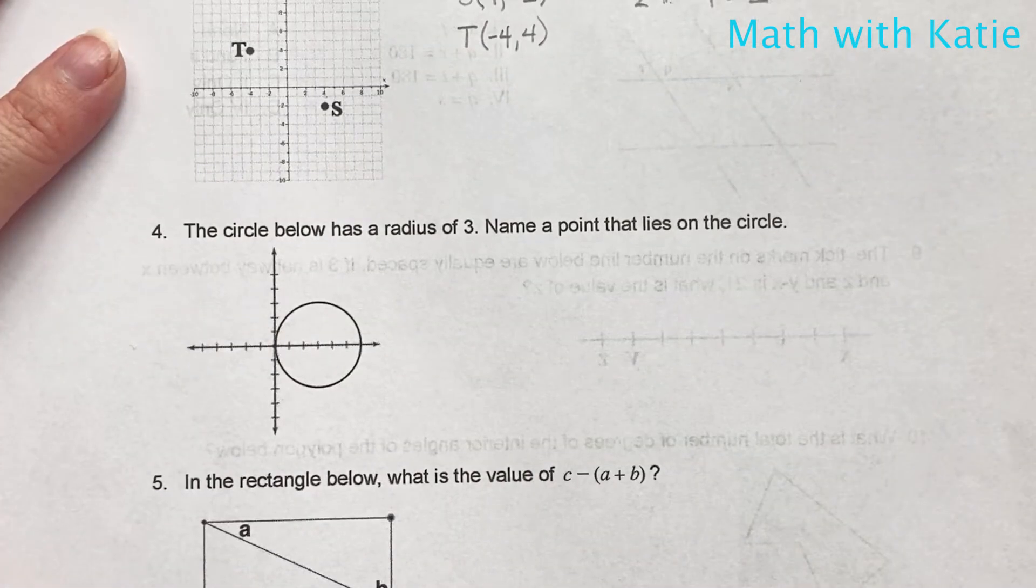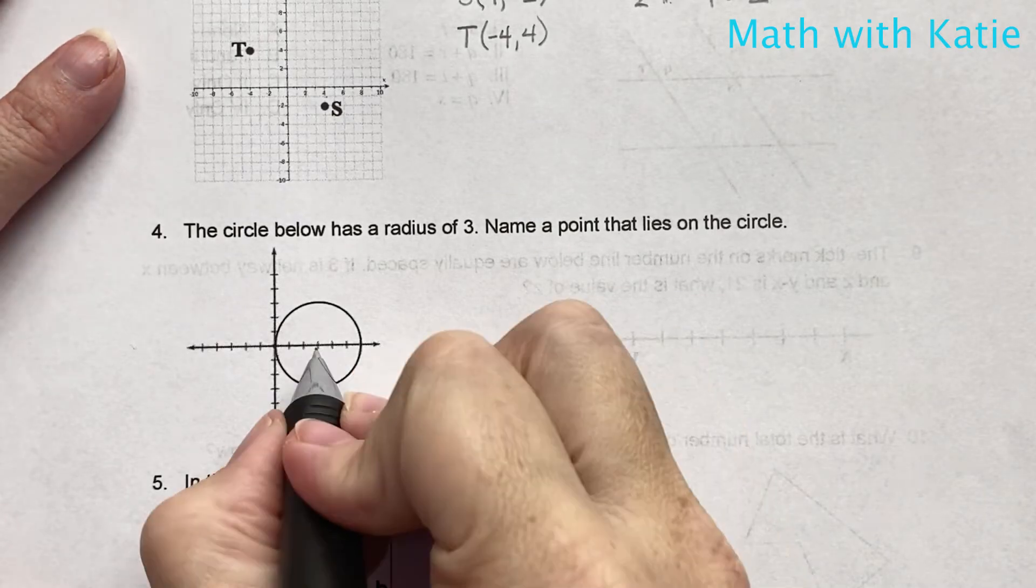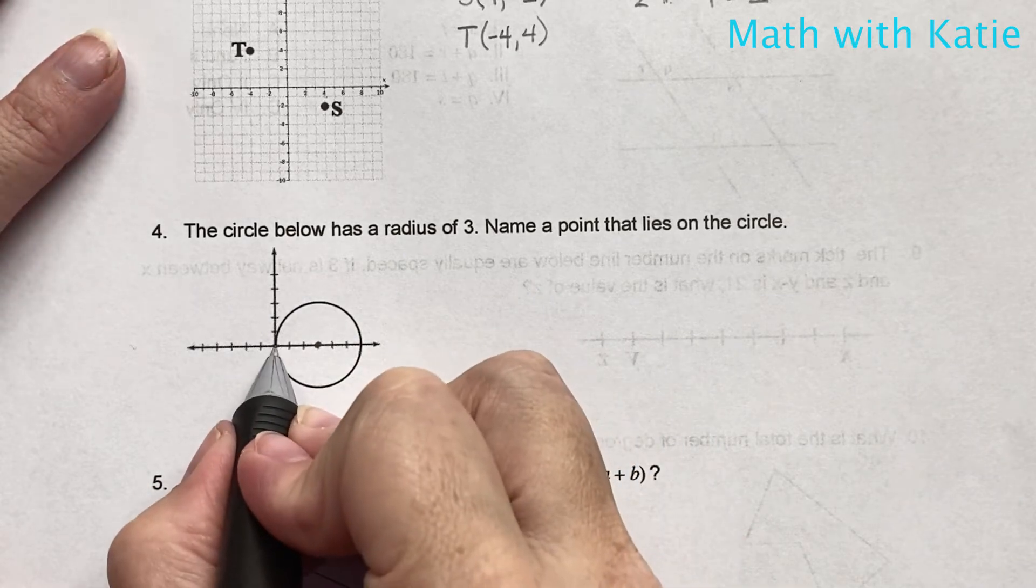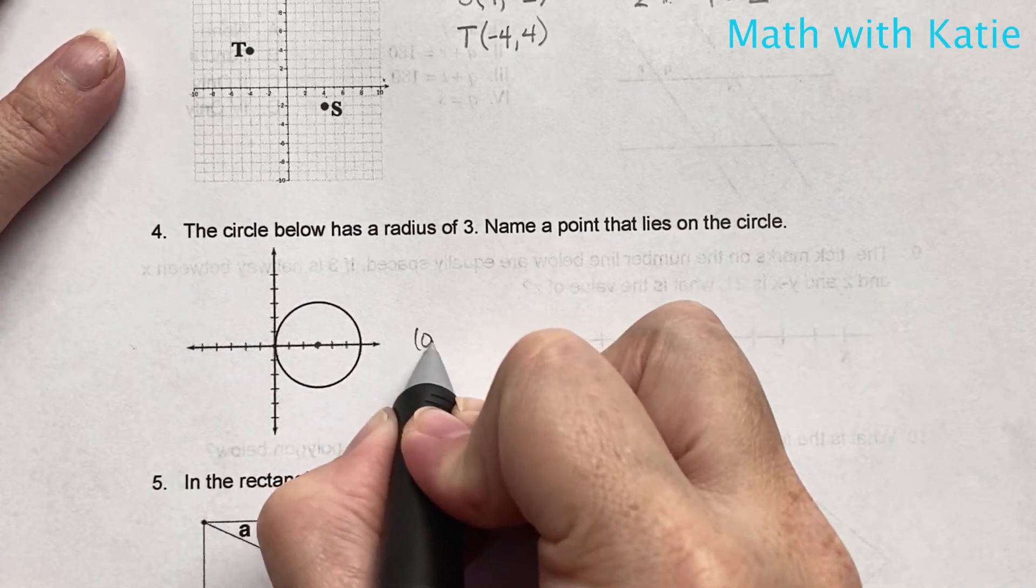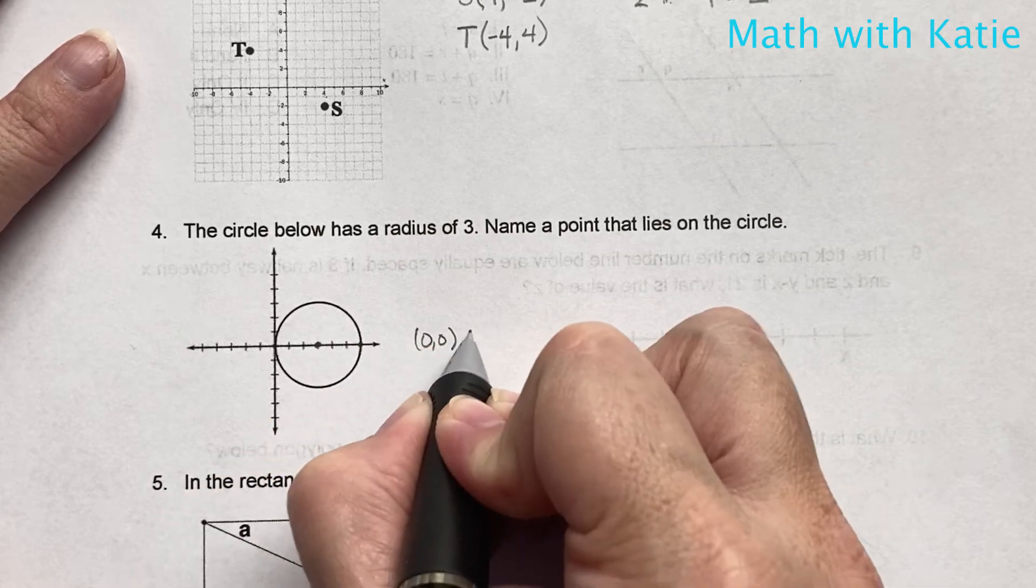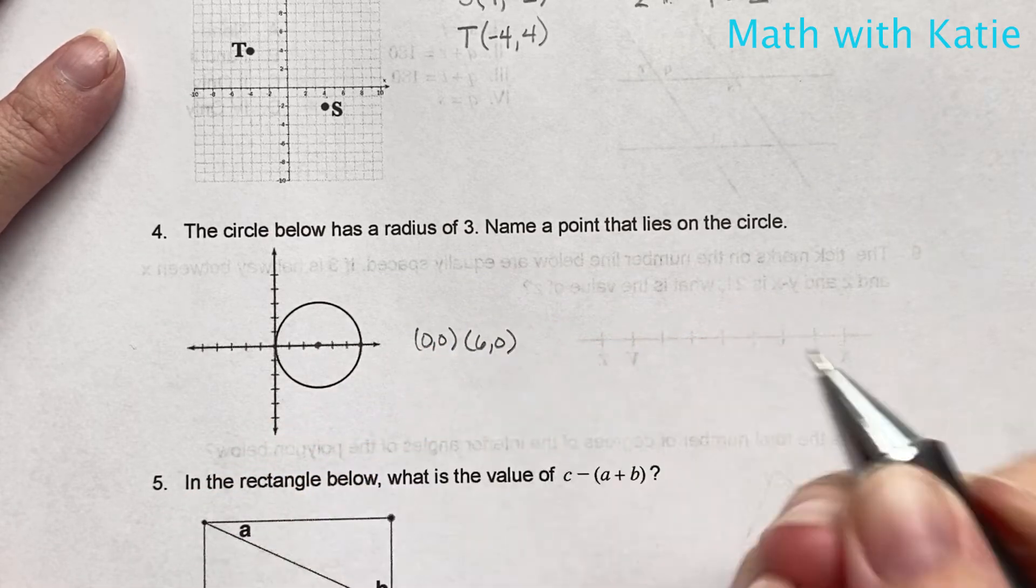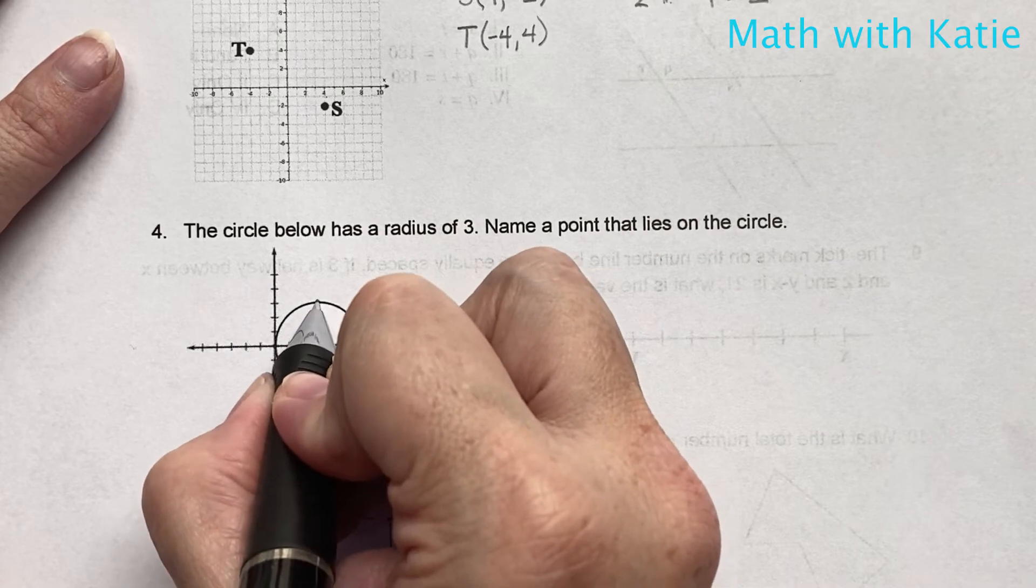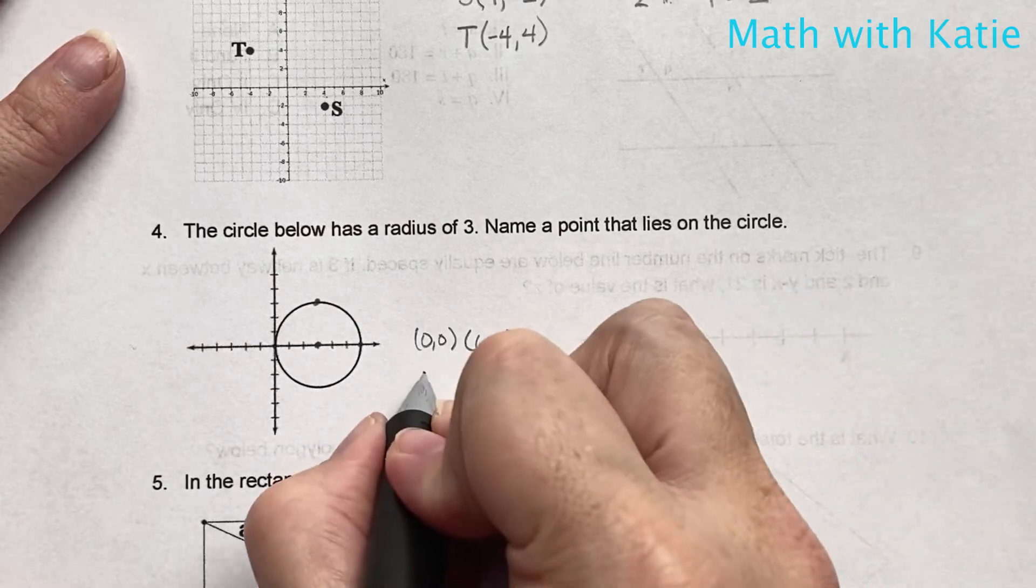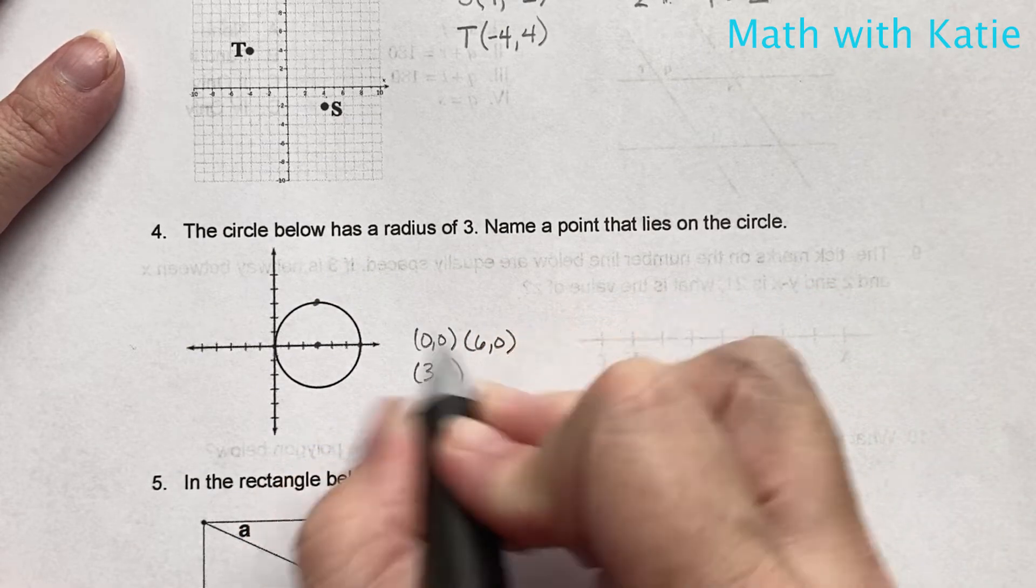The circle below has a radius of 3. Name a point that lies on the circle. Well, if its radius is 3, you see that point 0, 0 is on there. And we see that 6, 0 is also on there. Now, what about this point? That's going to be 3, 1, 2, 3, because the radius is 3. So we've got 3, 3 as well.